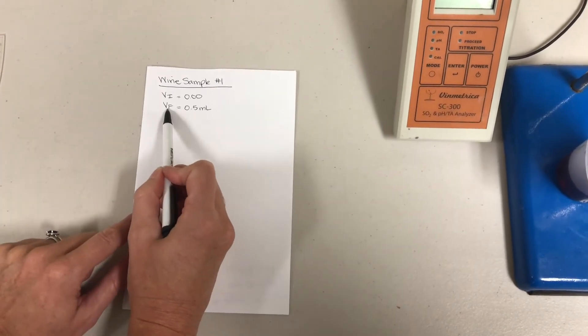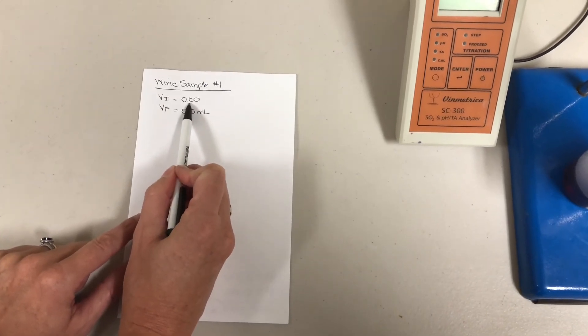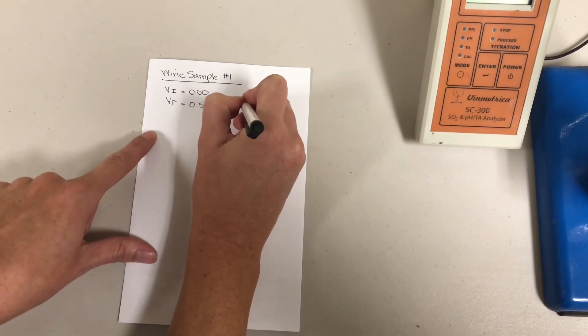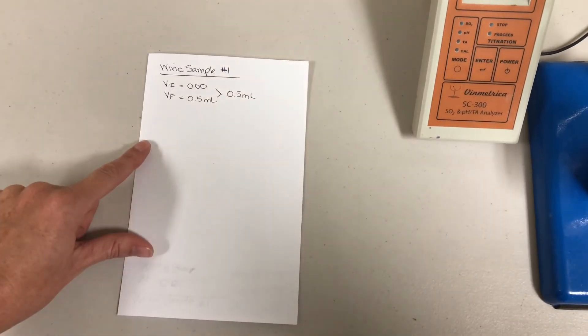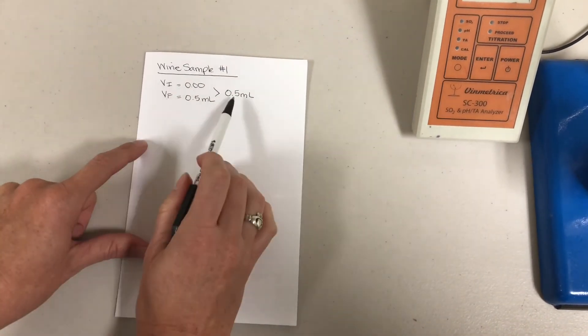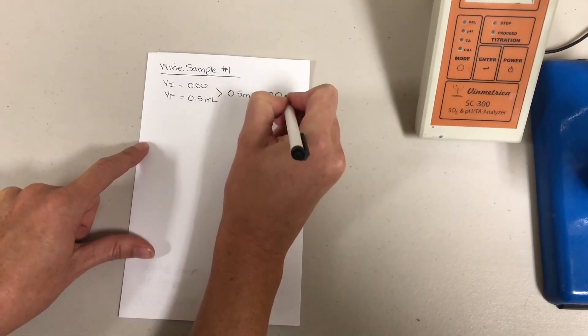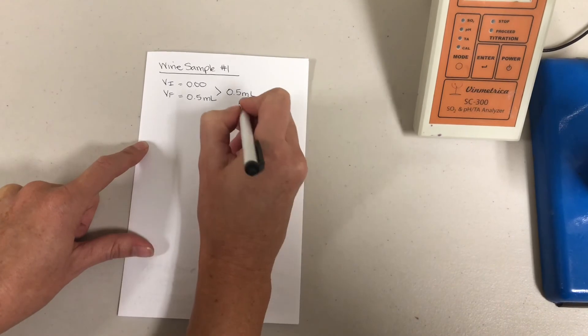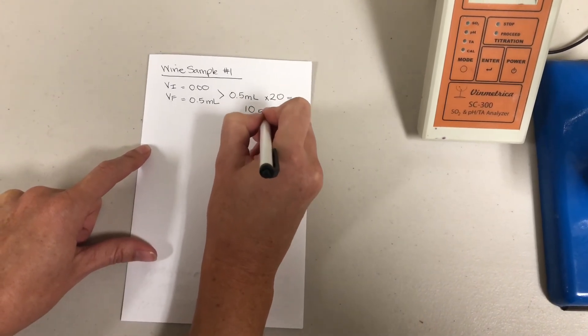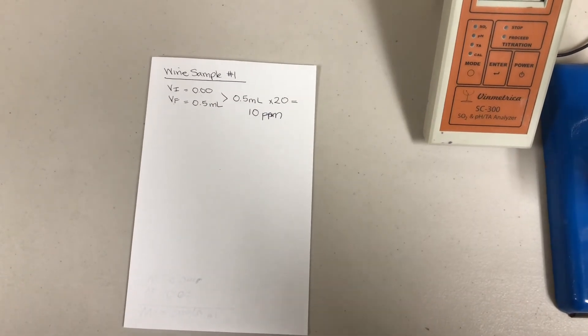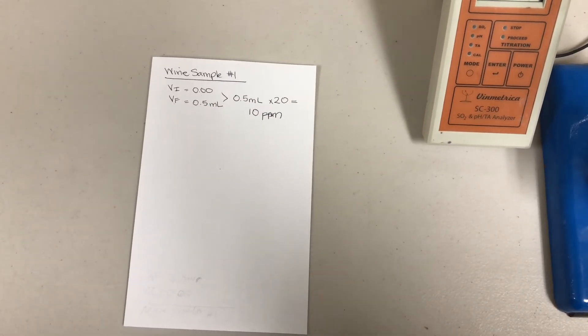You take your final volume, subtract it from your initial volume, which comes to 0.5 mils. Take that value, multiply it by 20. This wine sample has 10 parts per million of free SO2.